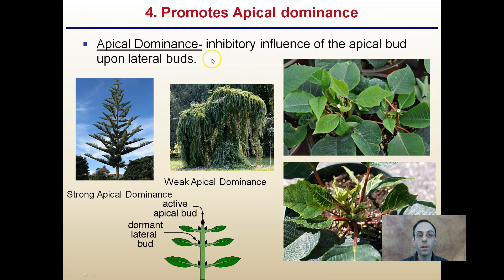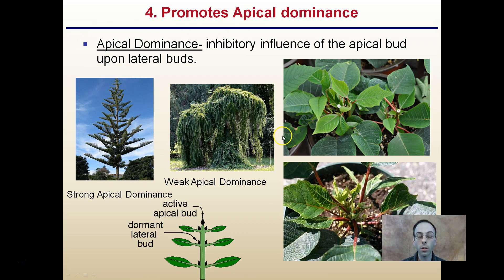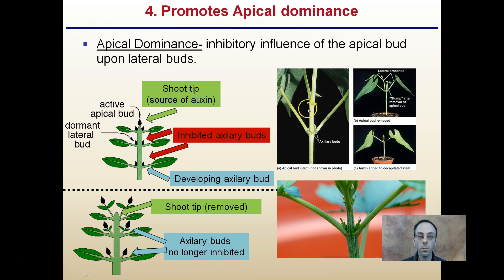Auxin promotes apical dominance, which is an inhibitory influence of the apical bud upon lateral buds. The apical bud is at the top; lateral buds are on the side. A plant with strong apical dominance has a strong triangular shape with a clear central bud. Weak apical dominance looks like a weeping tree with no defined central point. This is also involved in poinsettia plants — if you look at a large bush-like poinsettia, you'll notice pinch points in the center where the leading shoots have been pinched, causing that lateral bud formation to occur.